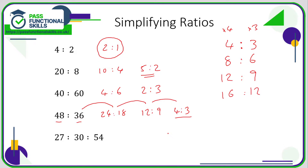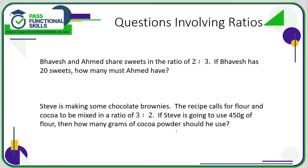With a three-way ratio it's no different — we're just looking for a number that divides all three parts. Here it's three: twenty-seven divided by three is nine, thirty divided by three is ten, and fifty-four divided by three is eighteen. So let's look at some actual questions involving ratios.